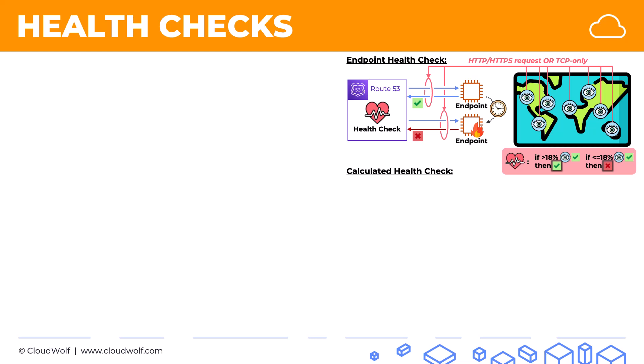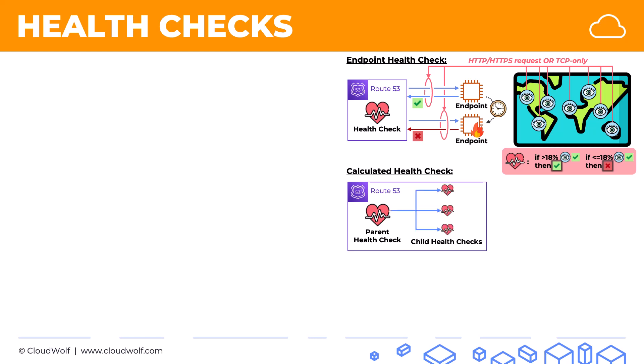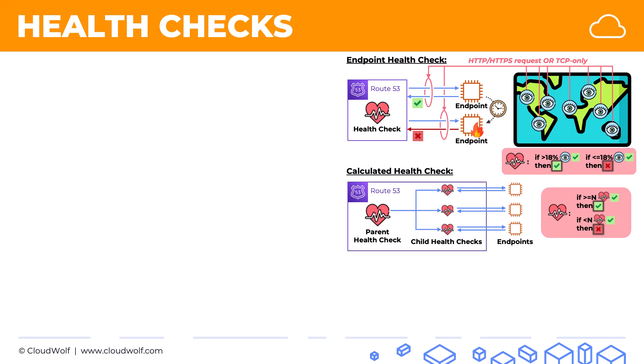The second type of health check is the calculated health check, which is quite simple. We have a parent health check with child health checks. The child health checks are the ordinary endpoint health checks — they're checking their endpoints and monitoring them. The parent health check is considered healthy when at least a certain number of these child health checks pass, and unhealthy if less than that number are healthy. You would use this if you have three different servers running the same thing and you want to make sure that at least two of them are running at any given point in time.